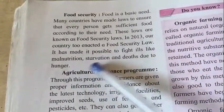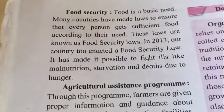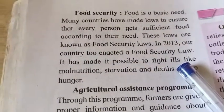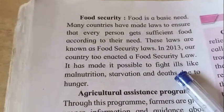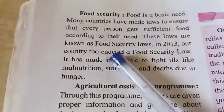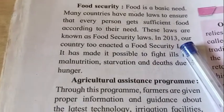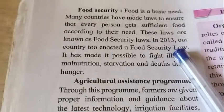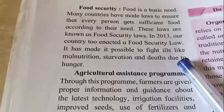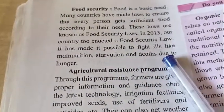In 2013, our country enacted the Food Security Law. It has made it possible to fight problems like malnutrition, starvation, and death due to hunger. Although we have the Green Revolution and different varieties of seeds and plants, there are still certain people who are not getting enough food even in a single day. That is why we must protect and not waste food, because while some waste food, others are suffering from malnutrition and starvation.